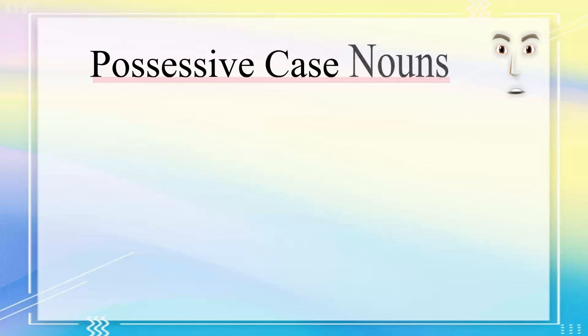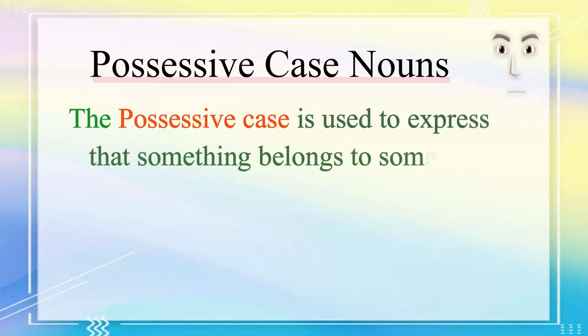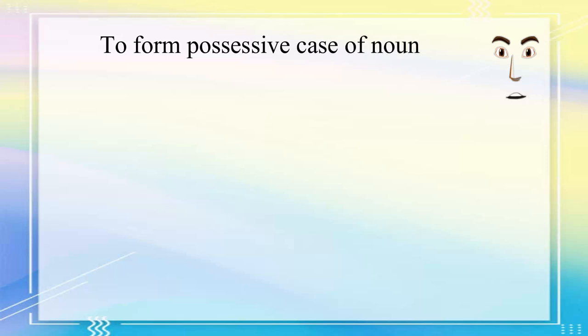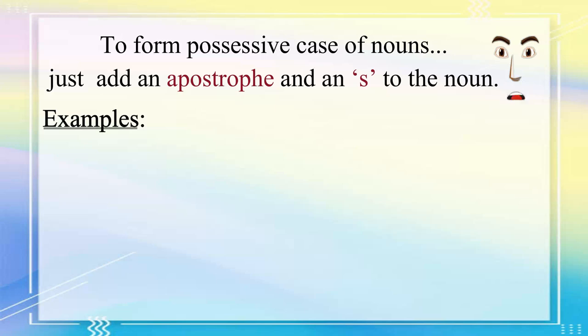In this module, we will learn about possessive case nouns. The possessive case is used to express that something belongs to someone, or to show the relationship between two or more people. It is easy to form the possessive form of nouns — just add an apostrophe and an S to the noun.